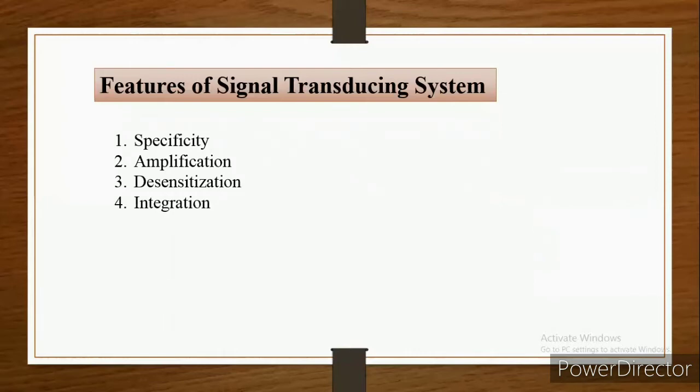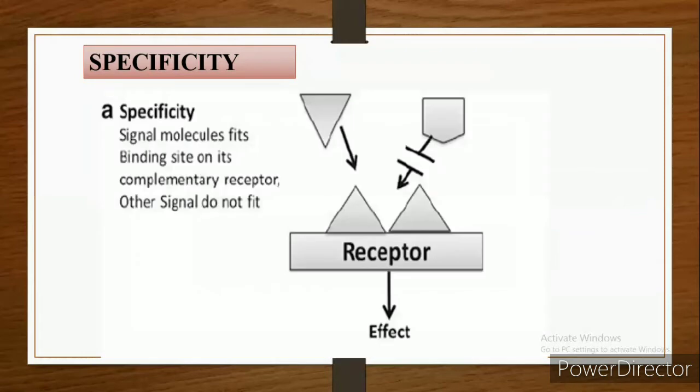There are four features: specificity, amplification, desensitization, and integration. We will study them one by one. Specificity is achieved by the molecular complementarity between a certain signal and certain receptor, mediated by weak non-covalent bonds.